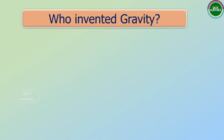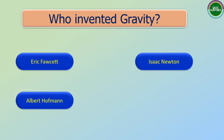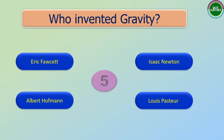Next question: Who invented gravity? The options are: Eric Fawcett, Isaac Newton, Albert Hochman, Louis Pasteur. And the correct answer is Isaac Newton.